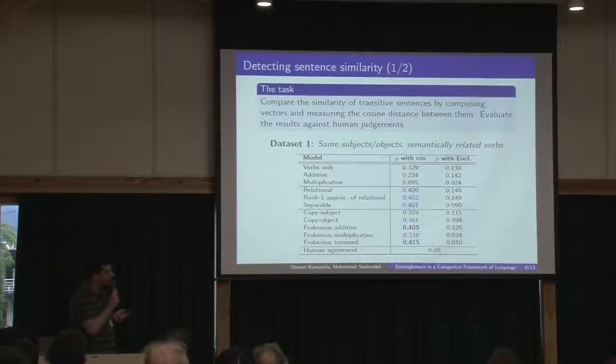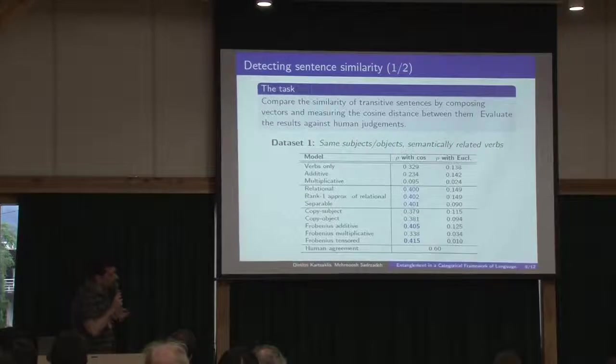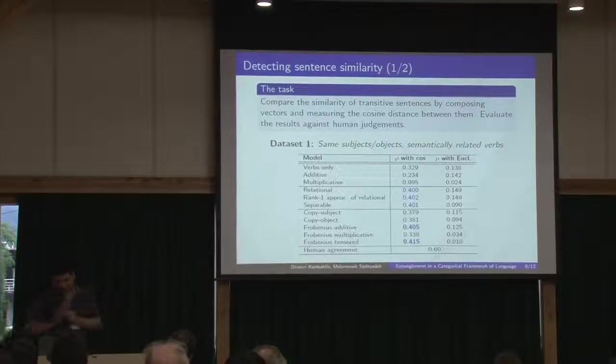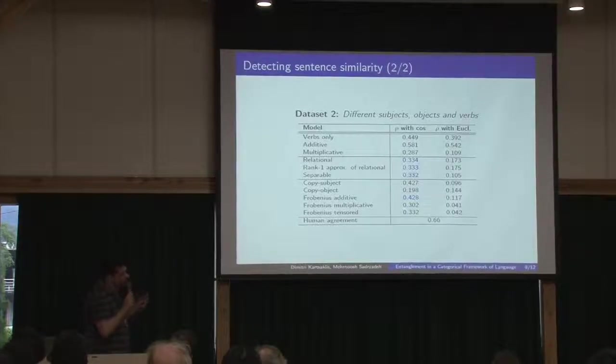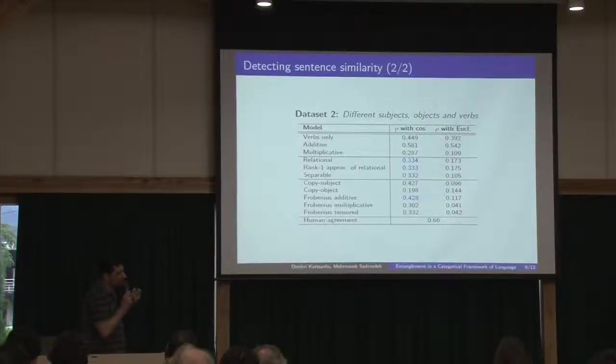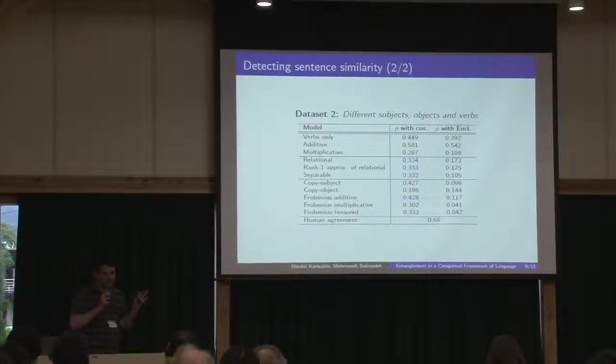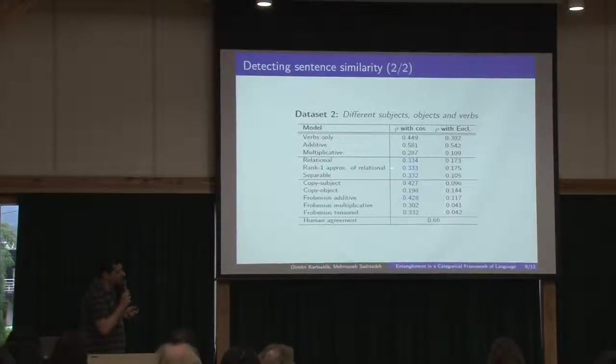So this was something new to us because it wasn't expected these models to give exactly the same numbers. We repeated the experiment with another dataset, a slightly different form of dataset. Here the subjects and objects and words are all different, while in the first dataset there was some similarity. And again we got similar results here.